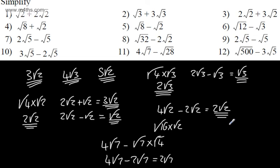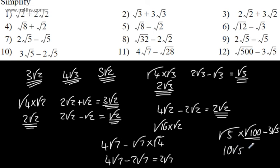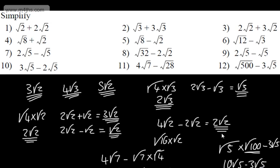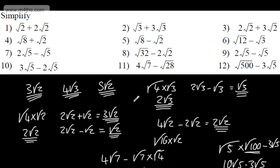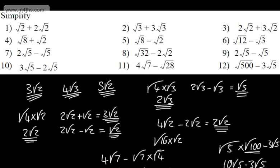Let's rewrite root 500. We could write this as root 5 multiplied by root 100 minus 3 root 5. The root of 100 is 10, so we have 10 root 5 minus 3 root 5, which gives us 7 root 5. So it's nice and straightforward, fairly logical — if we can convert these into like surds, we can add and subtract them. Let's do a few more.